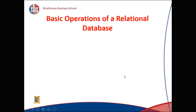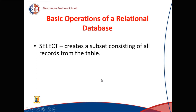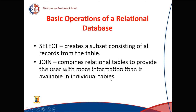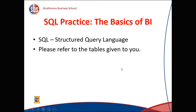There are some basic operations of a relational database. First, select — which creates a subset consisting of all records from a table meeting a condition. The other is join — join combines relational tables to provide the user with more information than is available in individual tables, allowing extraction of data that satisfies a particular condition for ad hoc reports.